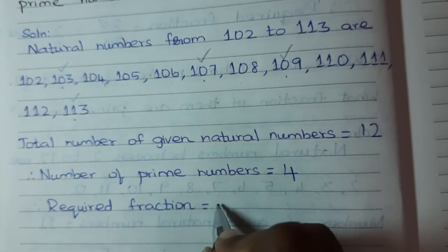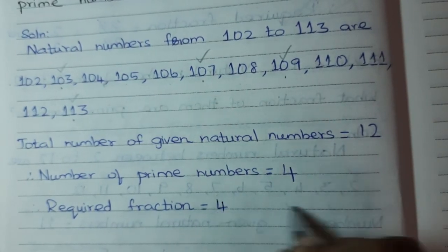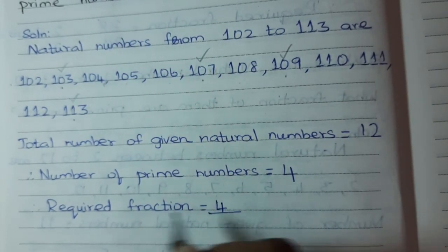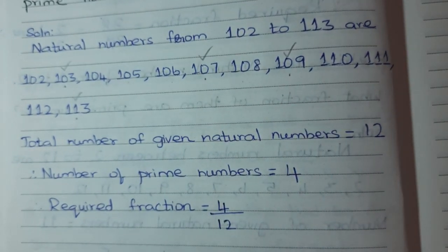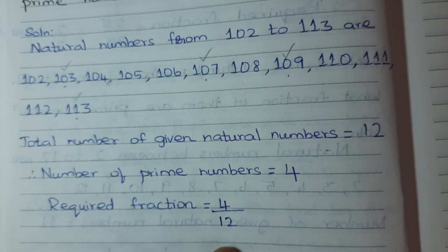So now I have to form the fraction in the form of number of prime numbers by total number of given natural numbers. That is 4 by 12. This is the answer. Thank you.